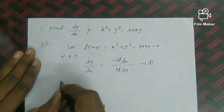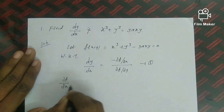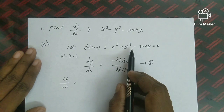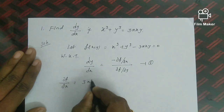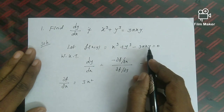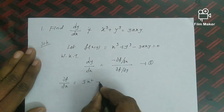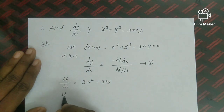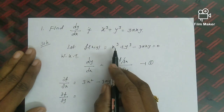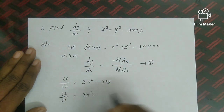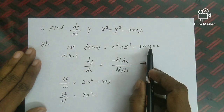So ∂f/∂x = 3x² − 3ay. Now for ∂f/∂y, treating x as constant: the first term x³ gives 0, y³ differentiates to 3y², and −3axy gives −3ax. So ∂f/∂y = 3y² − 3ax.